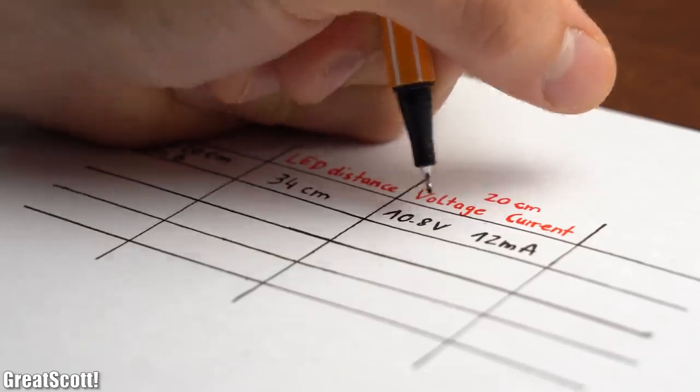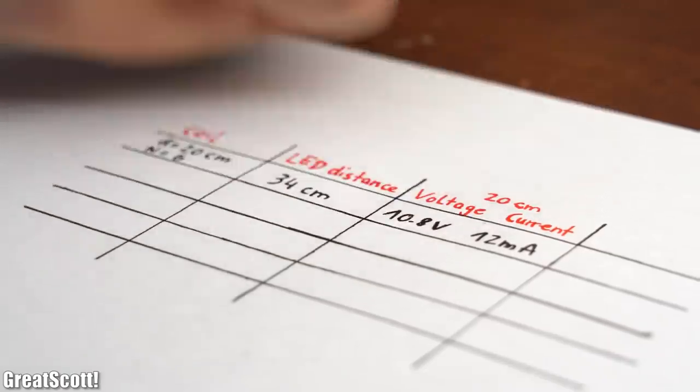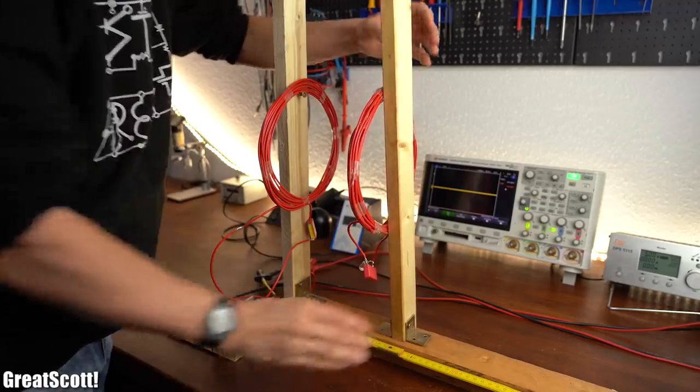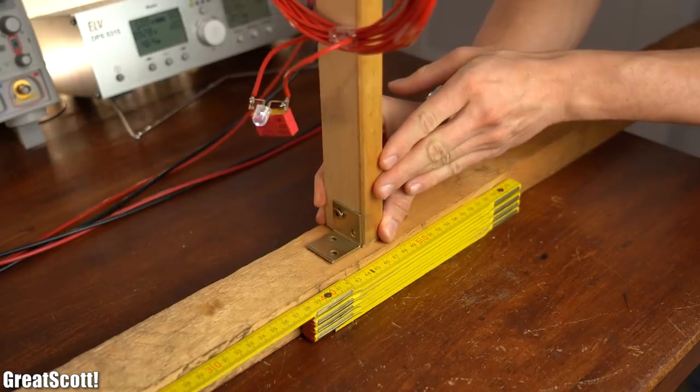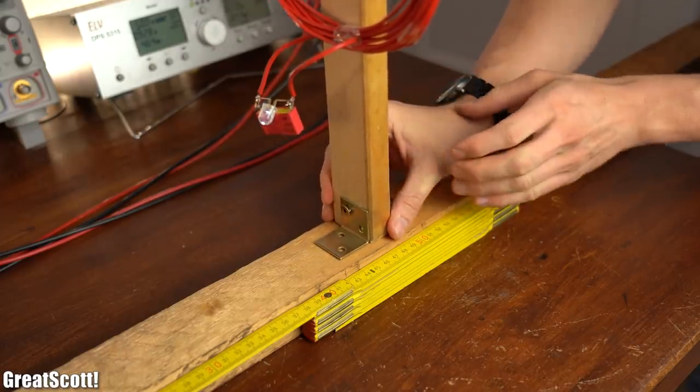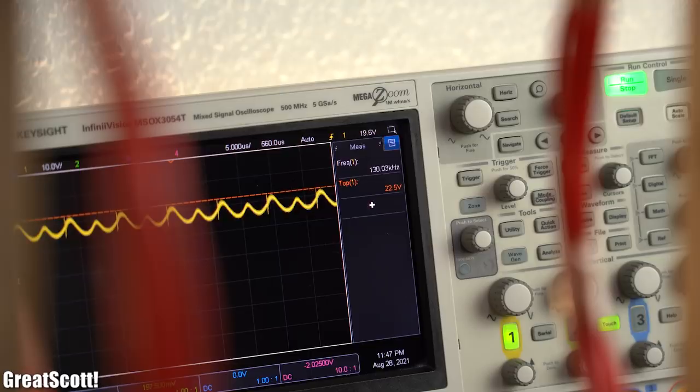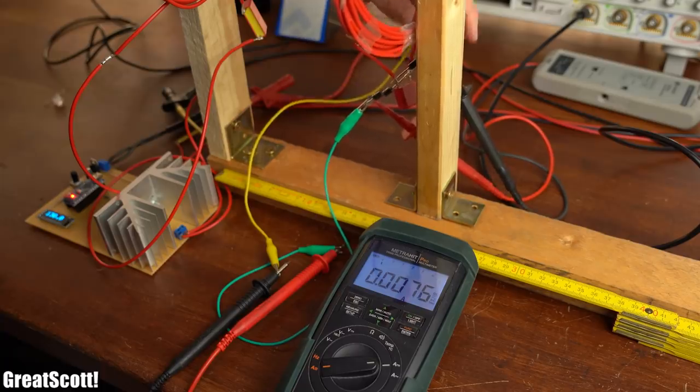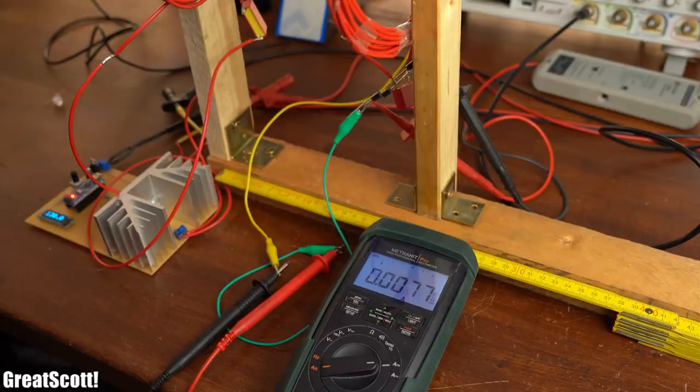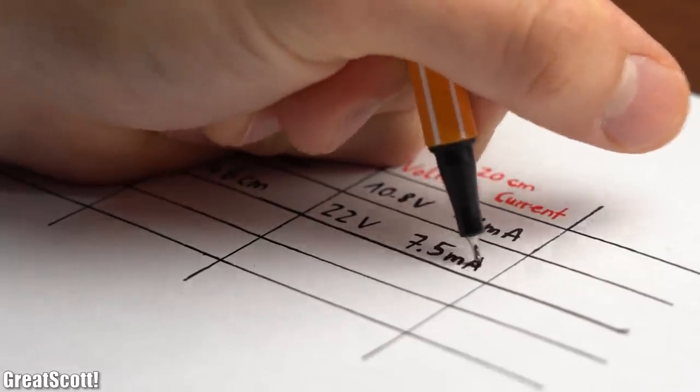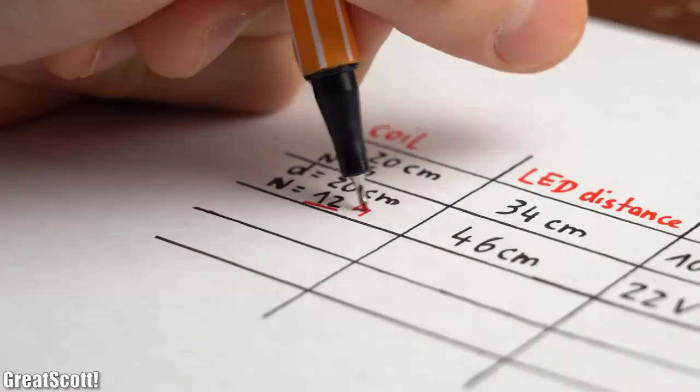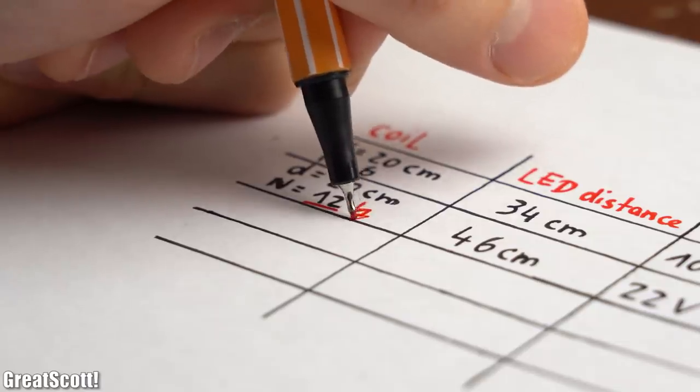Those measurements will be the base for the upcoming comparison tests, so time to switch to the 12-turn coils, which reached a bigger distance of around 46cm and a higher voltage at 20cm, but their short circuit current was only 7.5mA, which was quite a bit less than with 6 turns. It seems like making more turns is not the best idea.